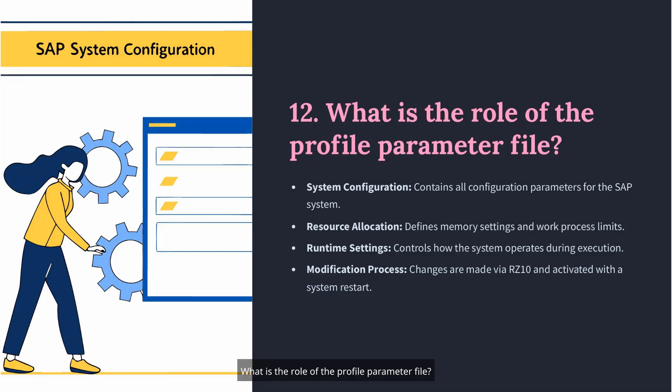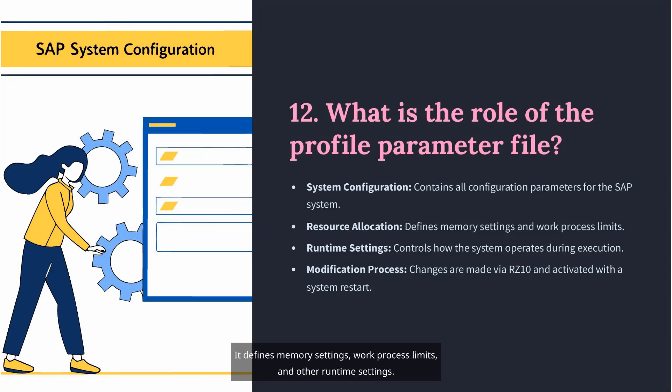Question 12: What is the role of the profile parameter file? The profile parameter file contains all the configuration parameters for the SAP system. It defines memory settings, work process limits, and other runtime settings. Changes are made via RZ10 and activated with a restart.